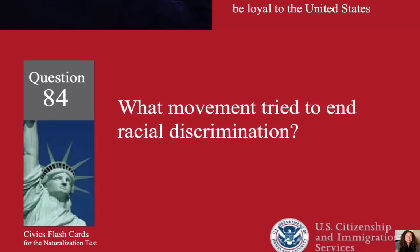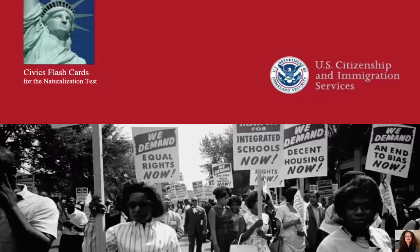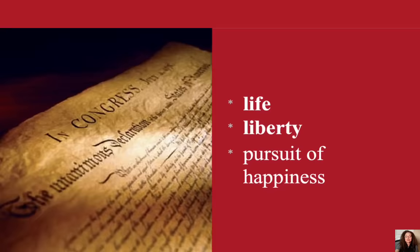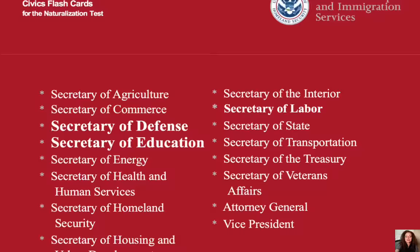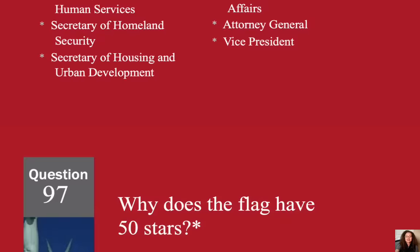What movement tried to end racial discrimination? Civil rights. What are two rights in the Declaration of Independence? Life and liberty. What are two cabinet-level positions? Why does the flag have 50 stars? Because there are 50 states.